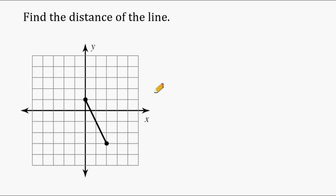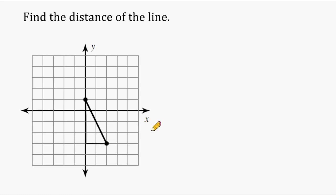One strategy that can be employed is by using the Pythagorean Theorem. Whenever you see a slanted line on a coordinate plane, think of it like the hypotenuse of a right triangle. So what you have to do is draw the two lines that would form the right angle of that triangle. For example, we could draw a line from this point to this point right here, and we can draw a line from this point to this point right here, forming our right triangle.